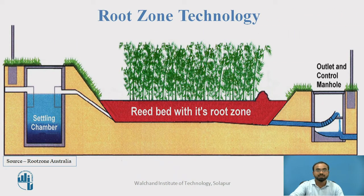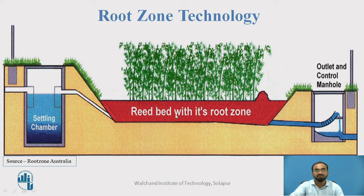In the picture, you can see the wastewater which is collected in the settling chamber is fed as an inlet into the root zone technology system, in which the red part has a lot of gravel on which reed bed plants have been implanted and grown. Their roots will automatically percolate inside the gravel, providing a large surface area so that microorganisms near the roots and adhered to the gravel will take out whatever organic matter is flowing through the water.